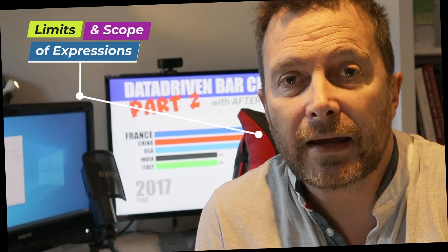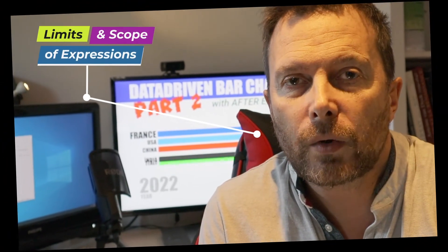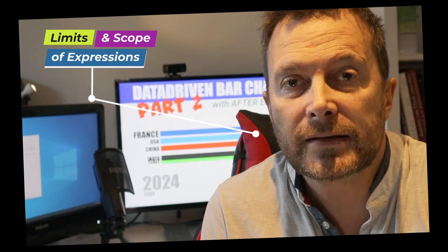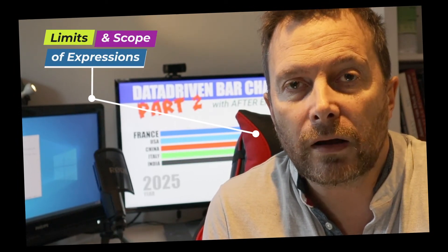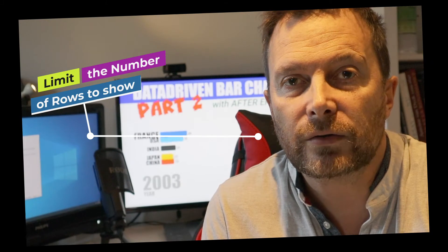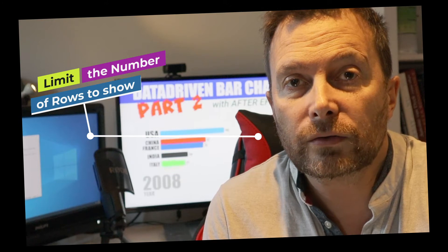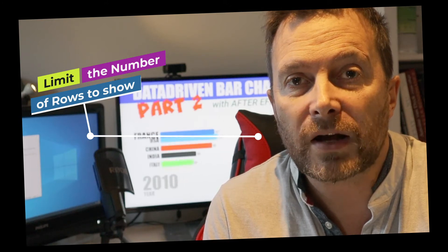Hi everyone and welcome to this second episode of the data-driven bar chart racing in After Effects using expressions. Today we are going to talk about limits and scope of expressions in After Effects, then we will dig into the project and see how we can limit the number of charts shown on the screen. For instance, if you have 10 or 15 countries in your CSV file but you want to show only the first five, we are going to see how easy it is to achieve this.